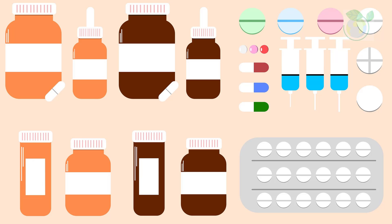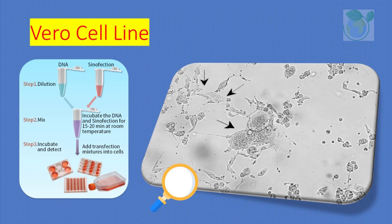Many researchers will maintain their cells with a low level of antibiotic added to the medium, most commonly a penicillin/streptomycin mixture. However, depending on the application for which the Vero cells will be used, adding antibiotics may not be recommended — for example, if the cells are to be infected with bacteria.